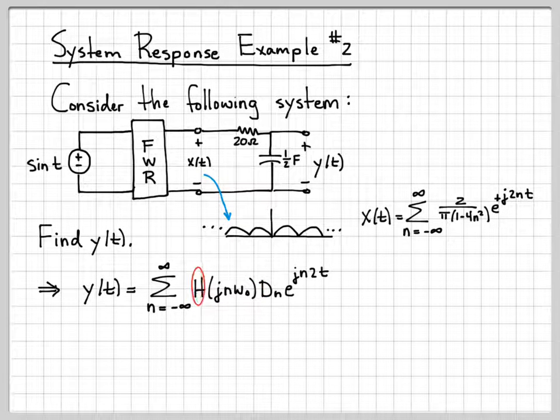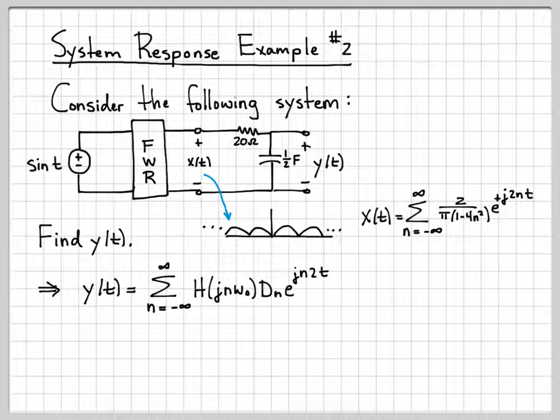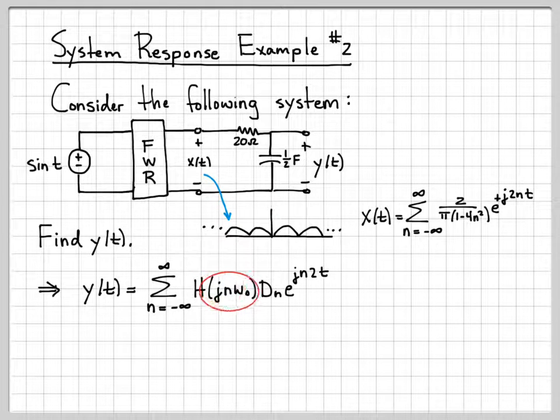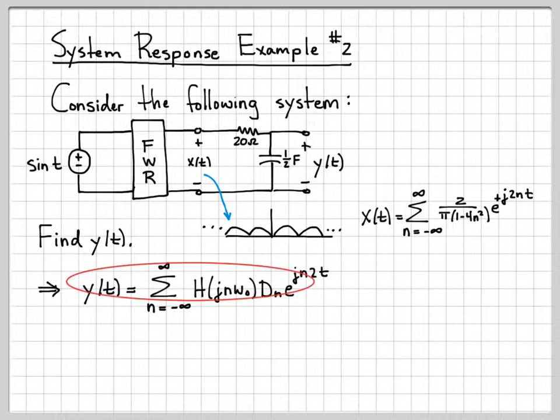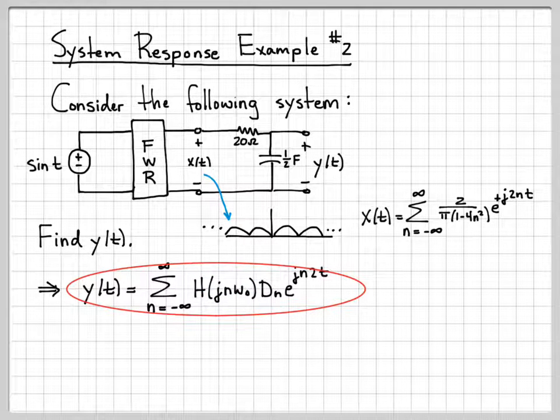Remember what H is? H is the transfer function of our system. So if we just knew what the transfer function of the system was, we could evaluate it at the point jn·ω₀. And then we could write down y(t) in the time domain very, very easily.